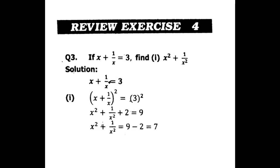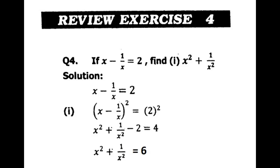So you have x squared plus one over x squared equals seven. Then in question four we have x minus one over x equals two, and find the value of x squared plus one over x squared. Again, same thing.